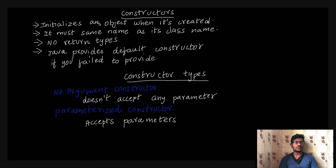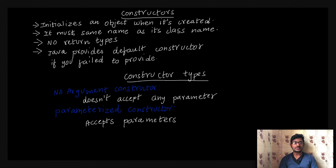We can use a constructor to initialize an object when it is created. This is one of the usages. The second point is it must have the same name as its class name.